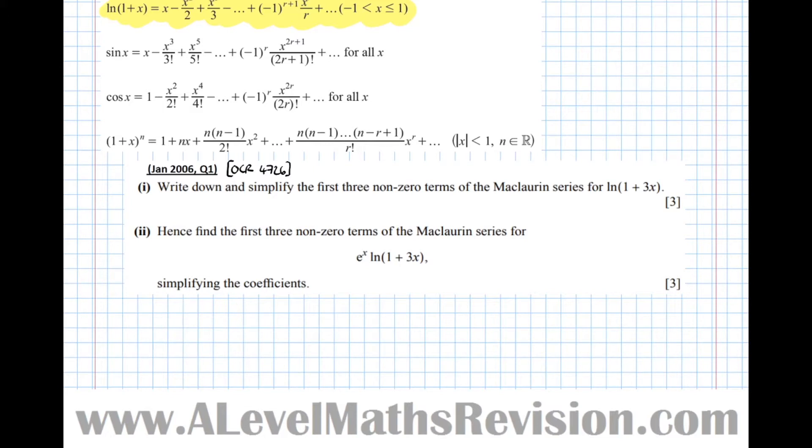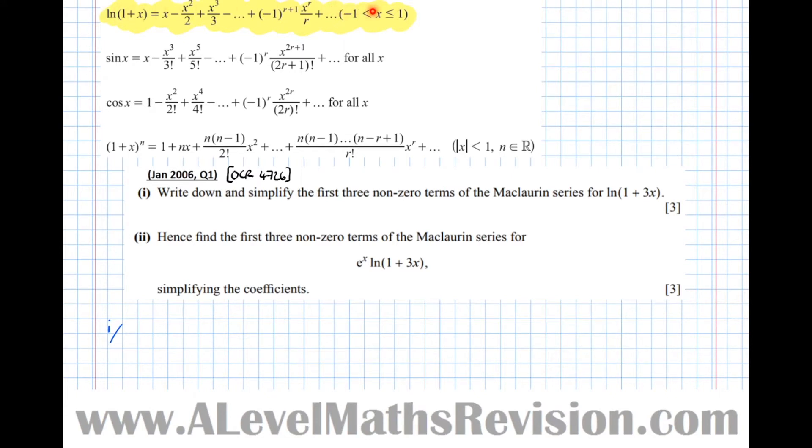So part 1, write down and simplify. The key there is write down, so it's implying that it's an easy thing to do. It is easy because here the formula is actually given. So what we're going to do, we're just going to write this out but replace the x's with 3x's. So ln of 1 plus 3x equals 3x take 3x squared over 2 plus 3x cubed over 3.